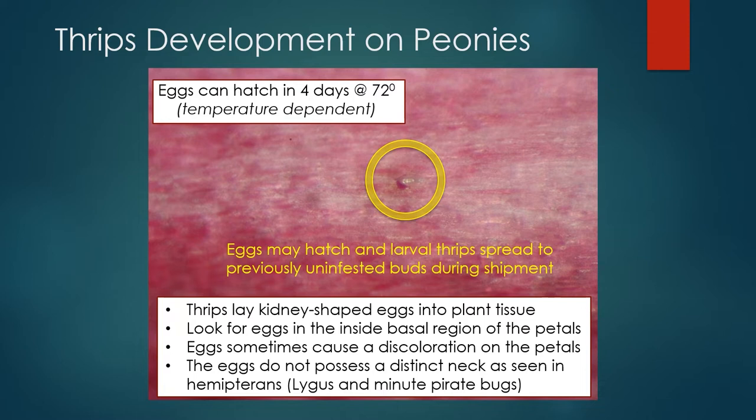Depending on temperature, eggs may hatch in as few as 4 days, and if this occurs during the shipping process, newly hatched thrips may spread to previously uninfected peony buds. When scouting for thrips eggs under a dissecting microscope, look for these kidney-shaped objects near the inner basal regions of the petals. Because eggs are inserted into plant tissue, the area around the egg may become discolored and can offer a clue of where to look. Other insects may lay eggs that look similar to those left by thrips — for example, lygus and minute pirate bugs — but thrips eggs lack the distinctive neck seen in the eggs of these true bugs.